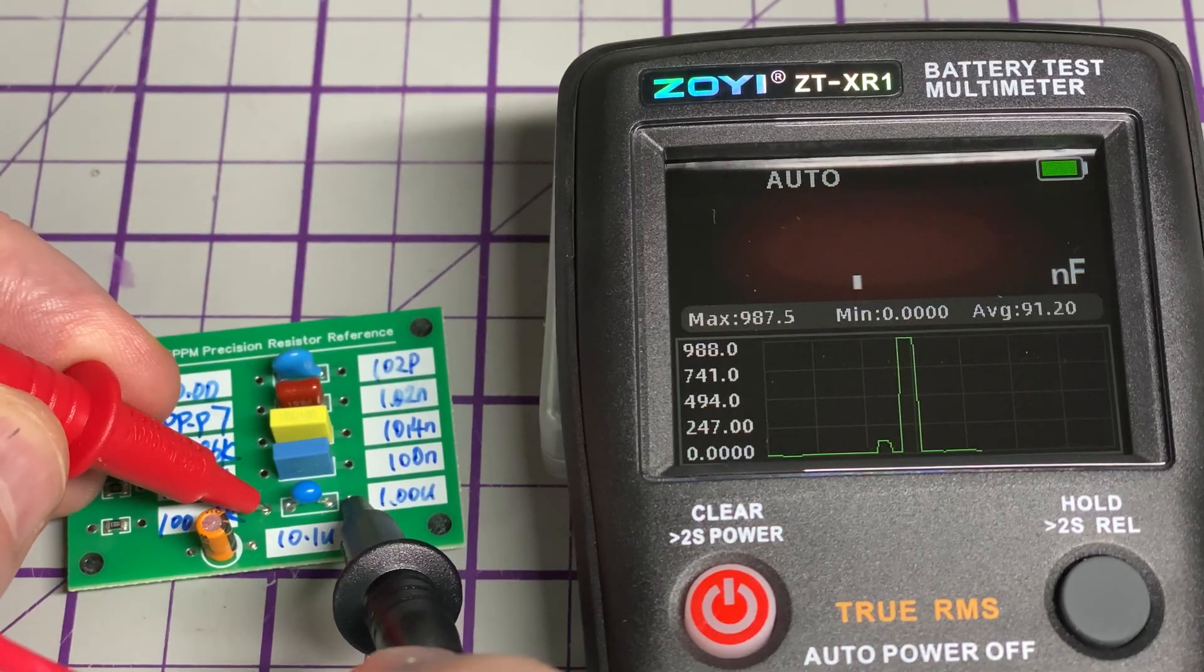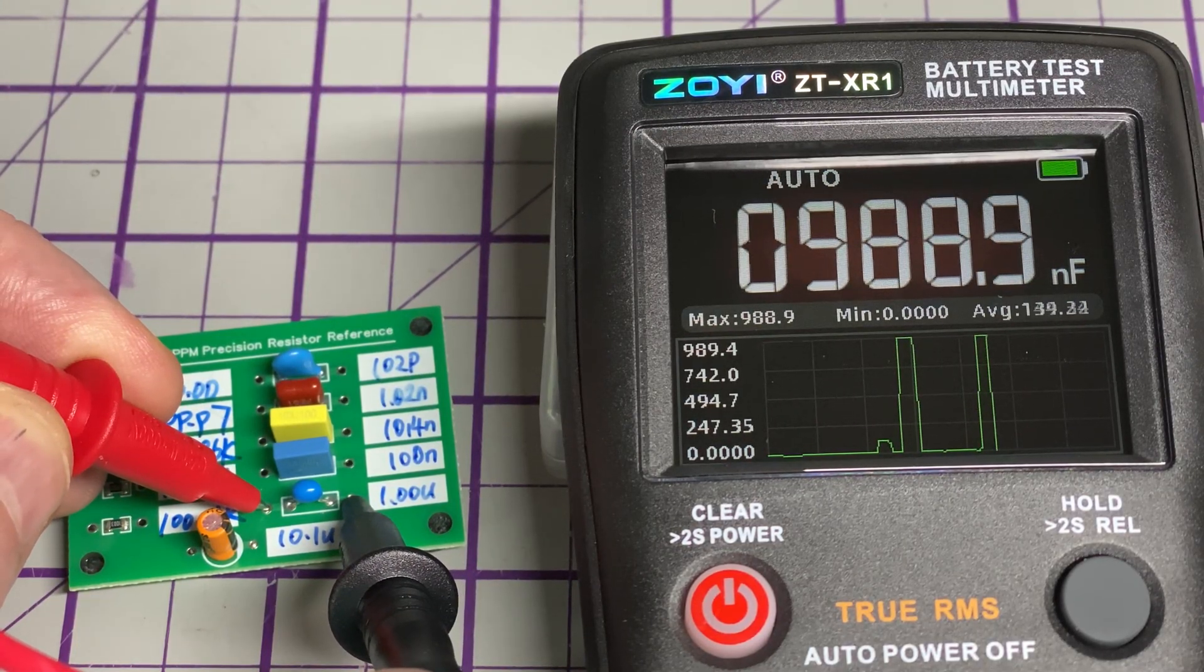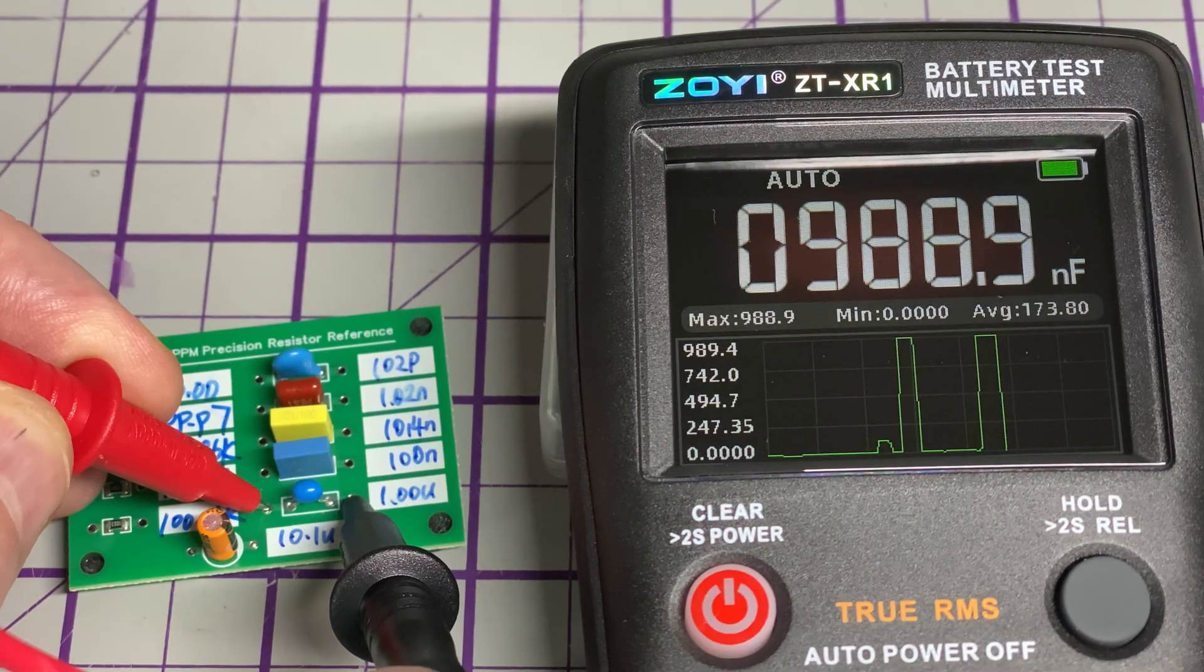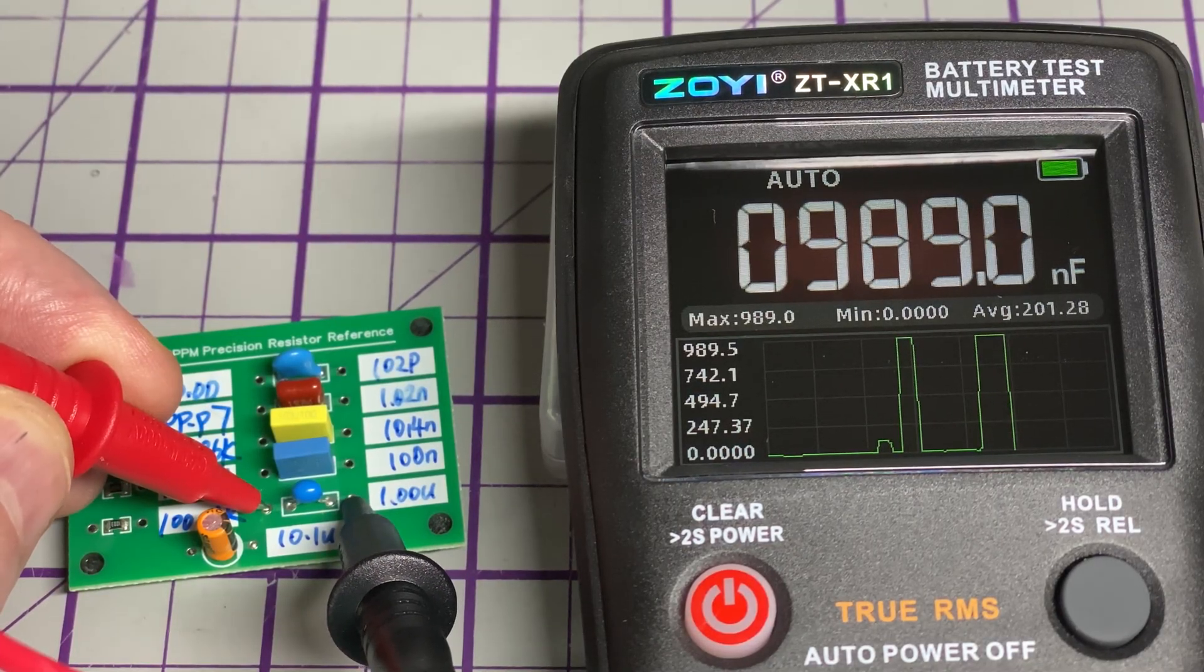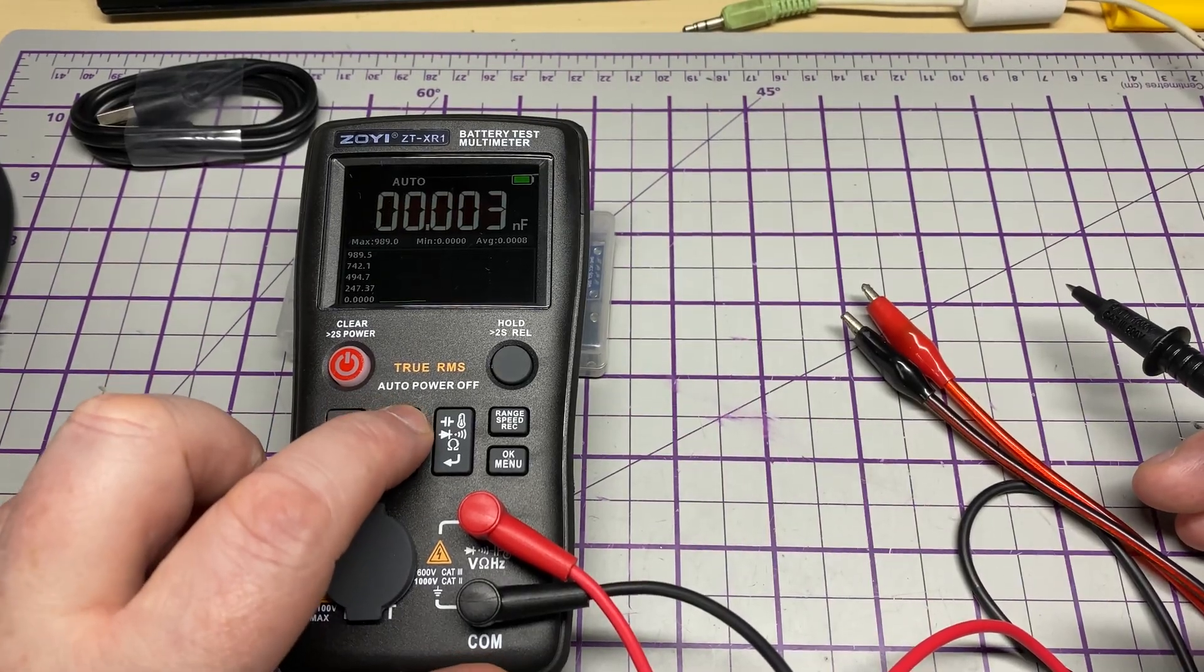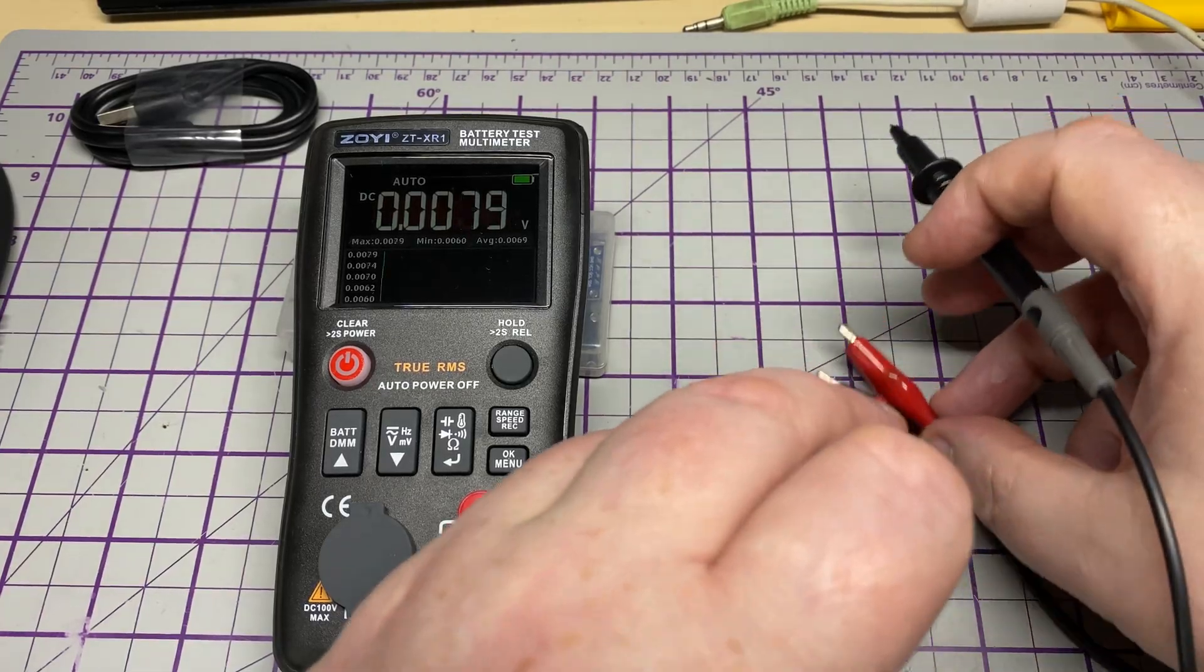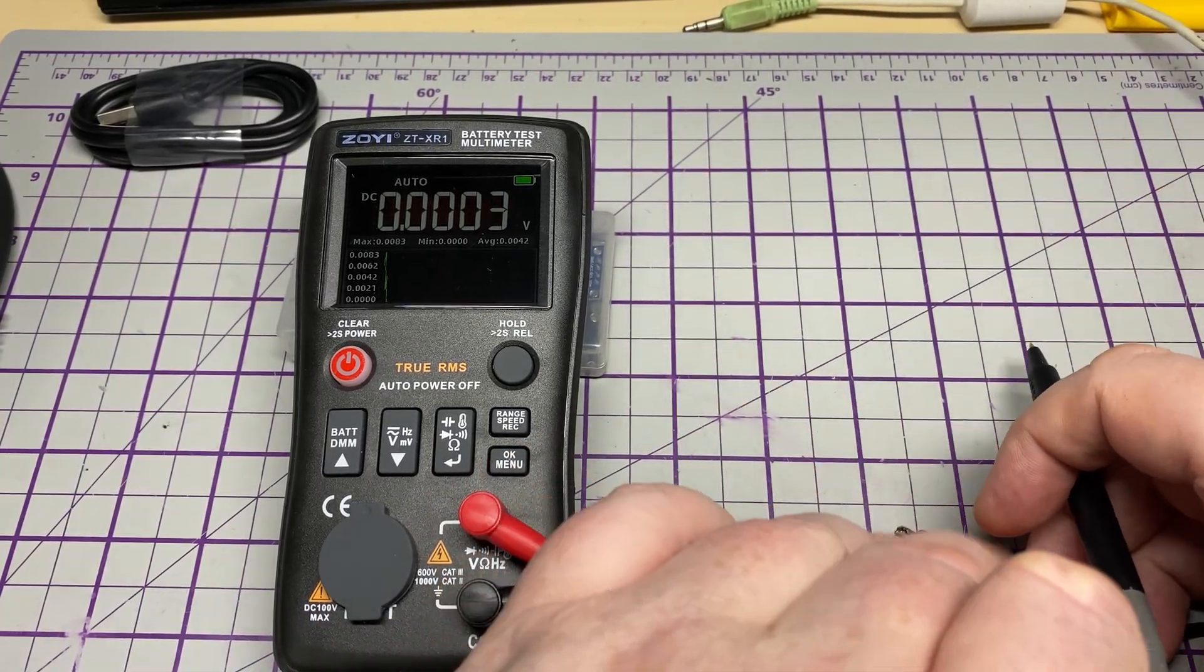We're just leaving this one to auto range. These references aren't too bad. Obviously they're not bang on 100% unless you spend a lot of money on a calibrated resistor reference. Capacitors are very subject to the surroundings, but for me that reads perfectly, not a problem.